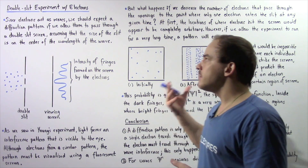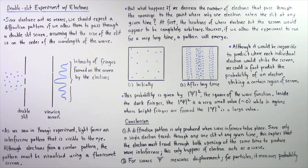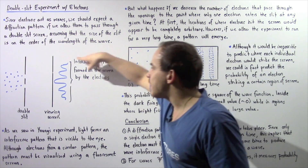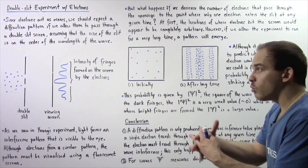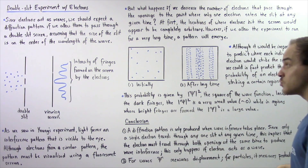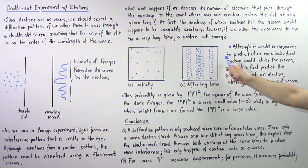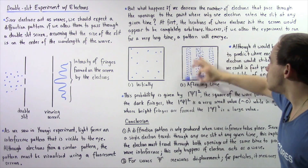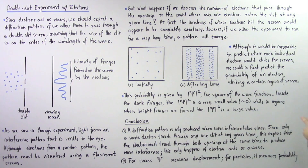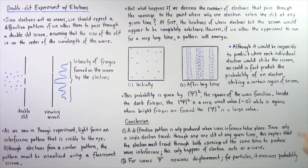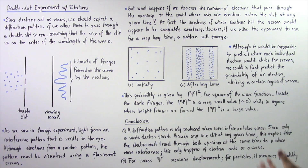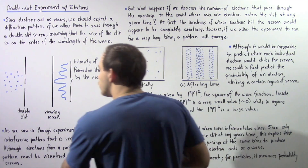What can we conclude from this experiment? A diffraction pattern is only produced when wave interference takes place — wave interference must lead to constructive and destructive interference, producing the bright and dark fringes shown in diagram 2. Since in this experiment only a single electron travels through any one of the two slits at any given moment, this implies the electron must travel through both openings at the same time to produce wave interference, and this only occurs if the electron behaves as a wave when passing through the slits.